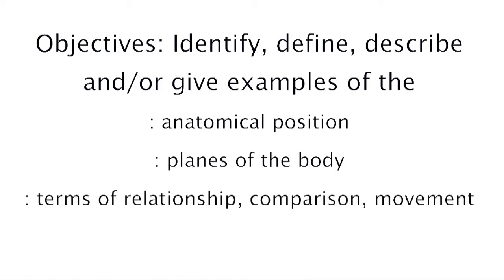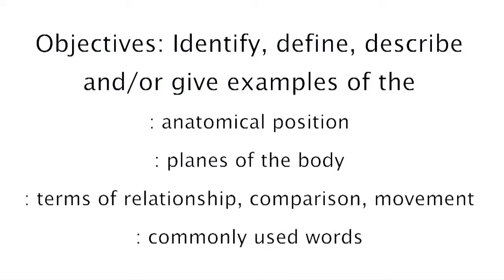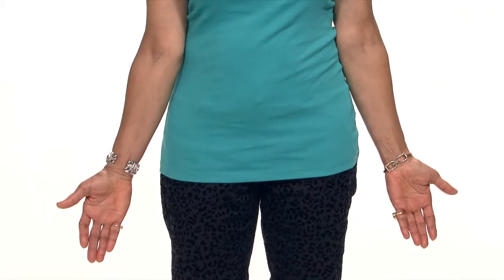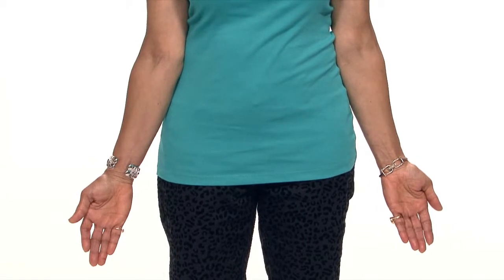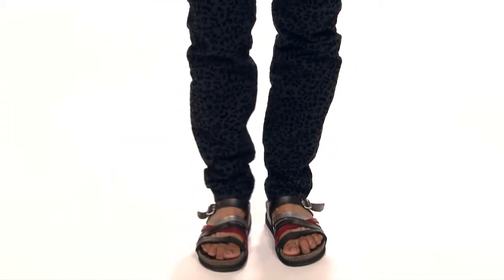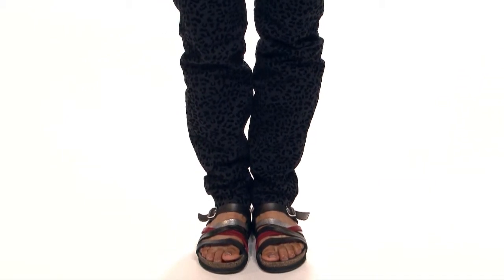Specific words are used to describe the relationships, movements, and positions. Traditionally, anatomical descriptions are based with a person in the anatomical position, which is standing erect, facing forwards, arms by the side, the palms facing forwards, the feet together, and the toes facing forwards.